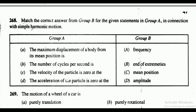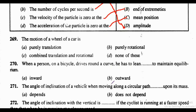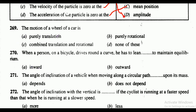Question 268: match the correct answers for statements about simple harmonic motion. The maximum displacement of a body from its mean position — option D, amplitude. The number of cycles per second — frequency. The velocity of the particle is zero at — option B, the extremities. The acceleration of the particle is zero at — option C, the mean position.